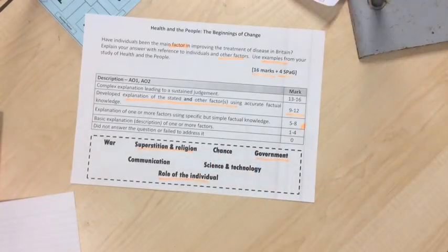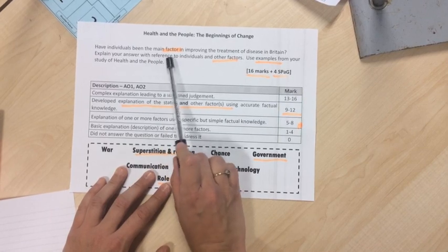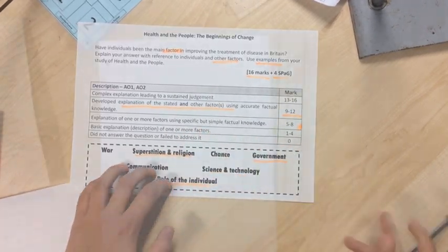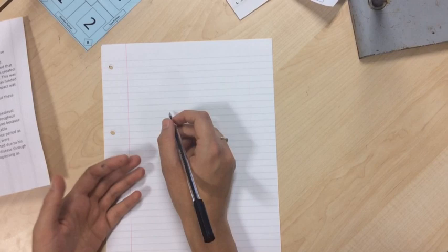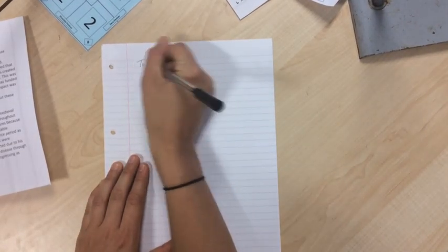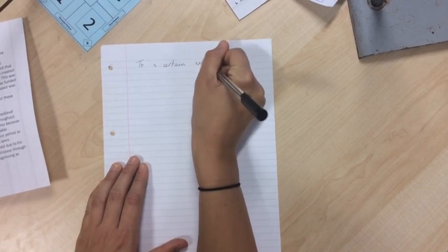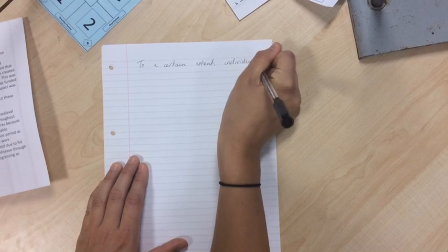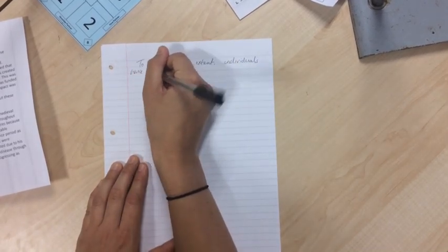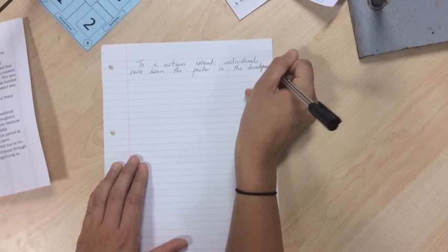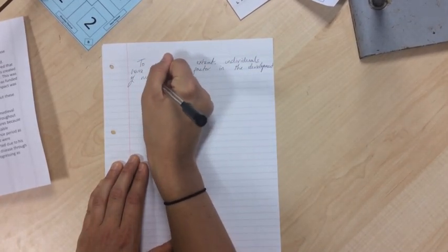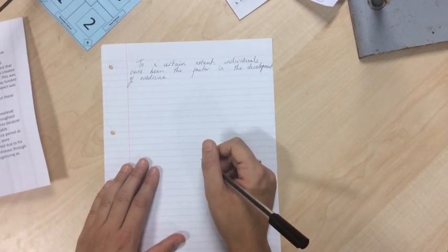Now I'm going to show you how I would write the first paragraph. It's always good advice to reread the question before you answer it: 'Have individuals been the main factor in improving the treatment of disease in Britain?' The first thing you need to do is reword the question. I'm going to start by explaining that individuals have been very influential in the progression of medicine, so I would begin: 'To a certain extent, individuals have been the main factor in the development of medicine.' Then I need to give two examples from two different time periods.